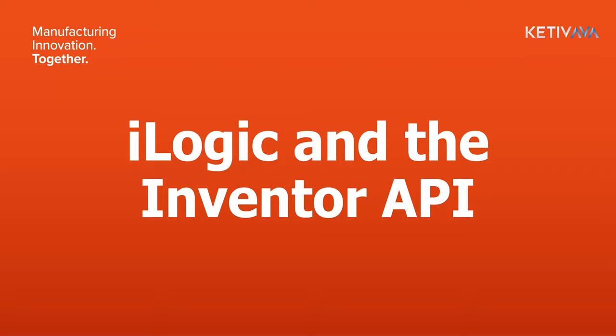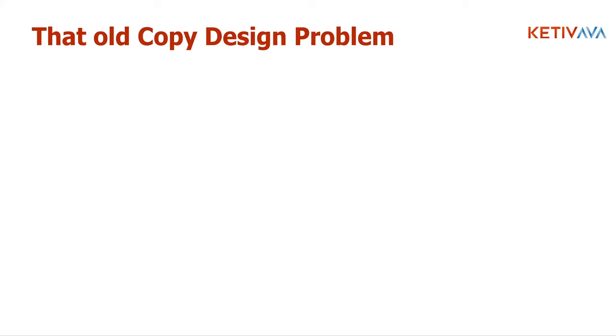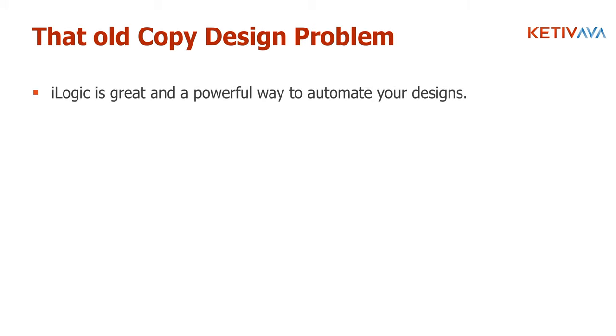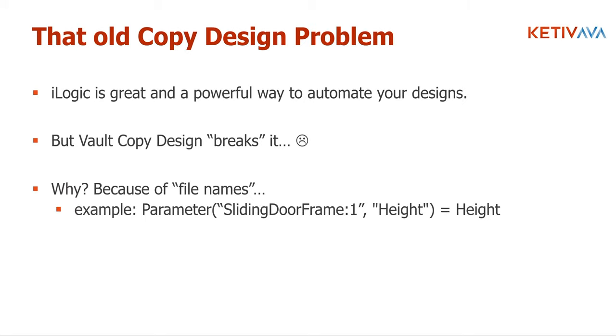First topic: the copy design problem. If you've used iLogic with Vault, you know that when you do a copy design in Vault, it can break your iLogic code. iLogic is a powerful way to automate your designs, but Vault copy design can break it. The reason is typically file names — when you copy design, the file name of the child changes, and hardcoded names in iLogic break because Vault can't update them.